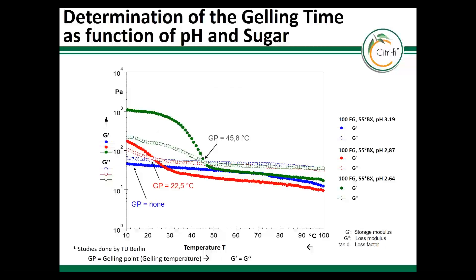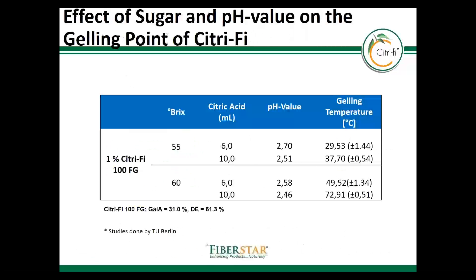The pH value and sugar content not only affect the gel itself, but also the gelation time. Together with the University of Berlin, we studied this effect using special equipment to measure viscosity during the cooling process of hot food preparations. This technique shows gel points as a function of sugar and acid. The results are summarized in a table: increased sugar and acid causes a higher gelling temperature. This is important for very high Brix systems, such as baking-stable fruit preparations. A buffer system, which retards the drop of pH, can help if you need to fill at lower temperatures to avoid pre-gelation in your cooking vessel.